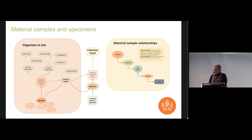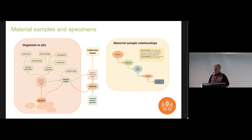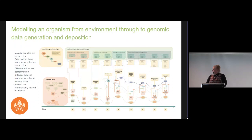We decided to go back to the material sample and look at the way it changes across time and space as people do genomics data research. We're only looking at material samples here because you can't get DNA from human observations or photographs — we're only concerned with things that are physical samples in a collection. We mapped out the relationship as it changes over time: is it sub-sampled, is there a DNA extraction, and what sorts of data are derived from that.